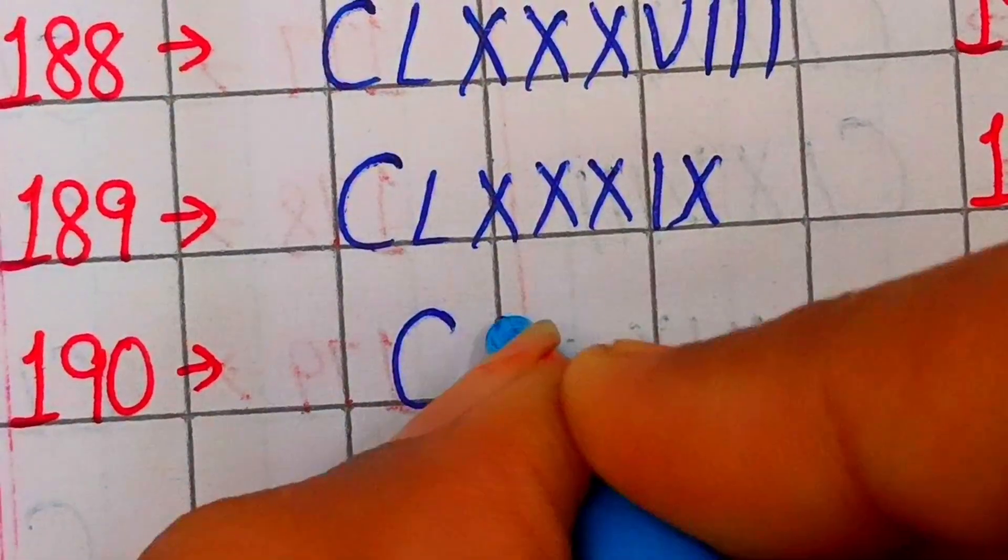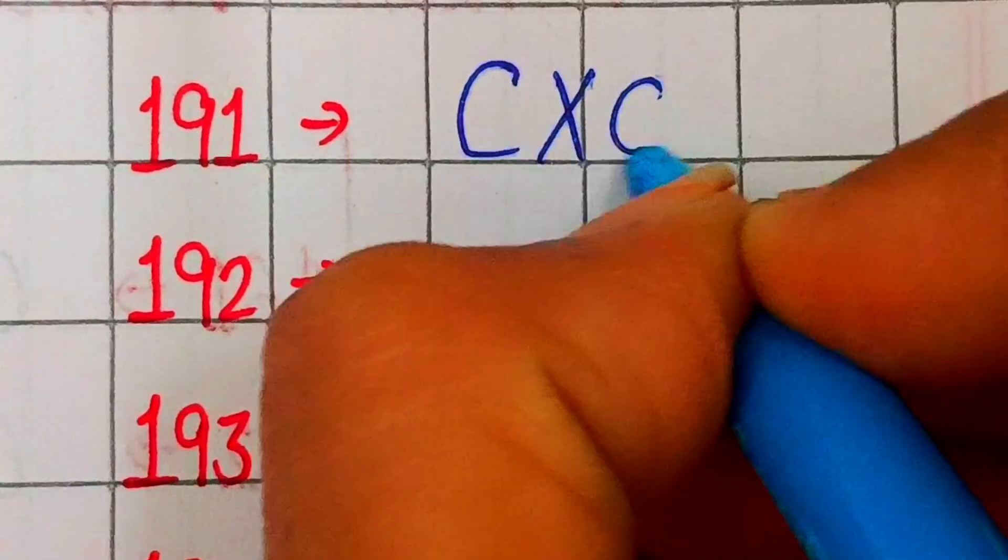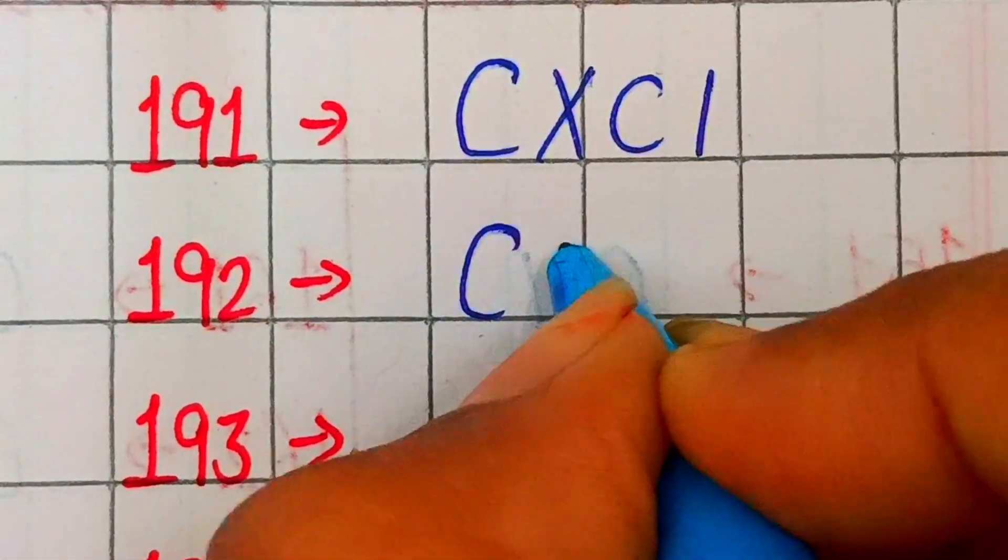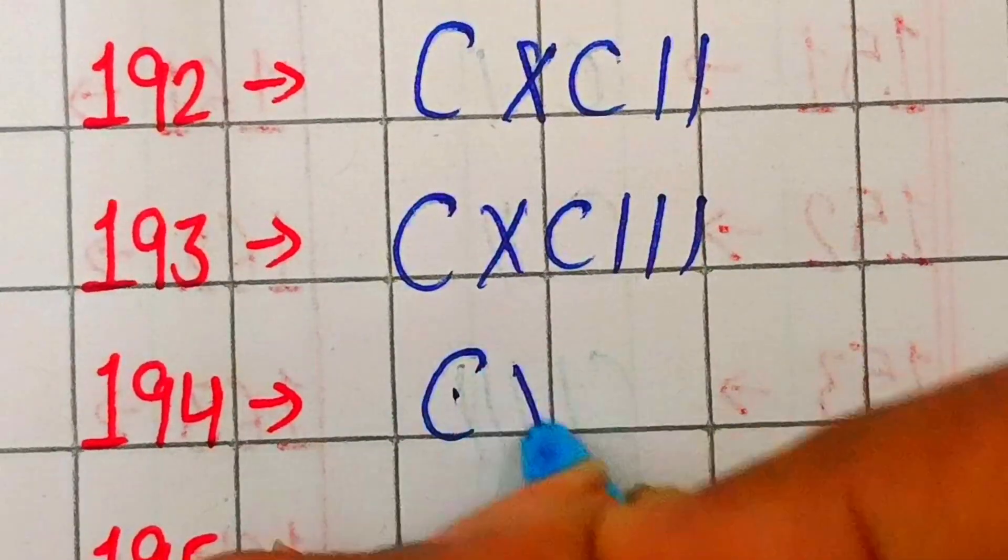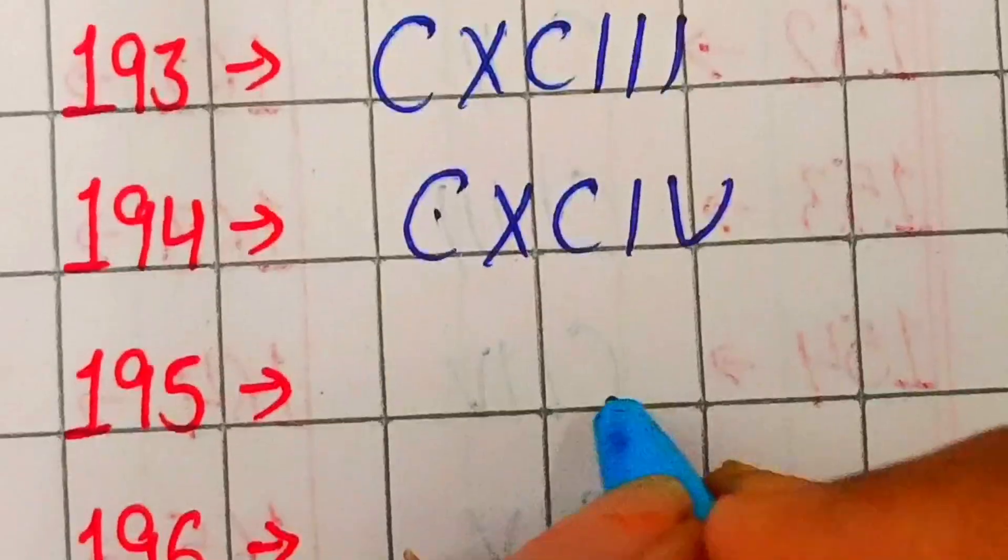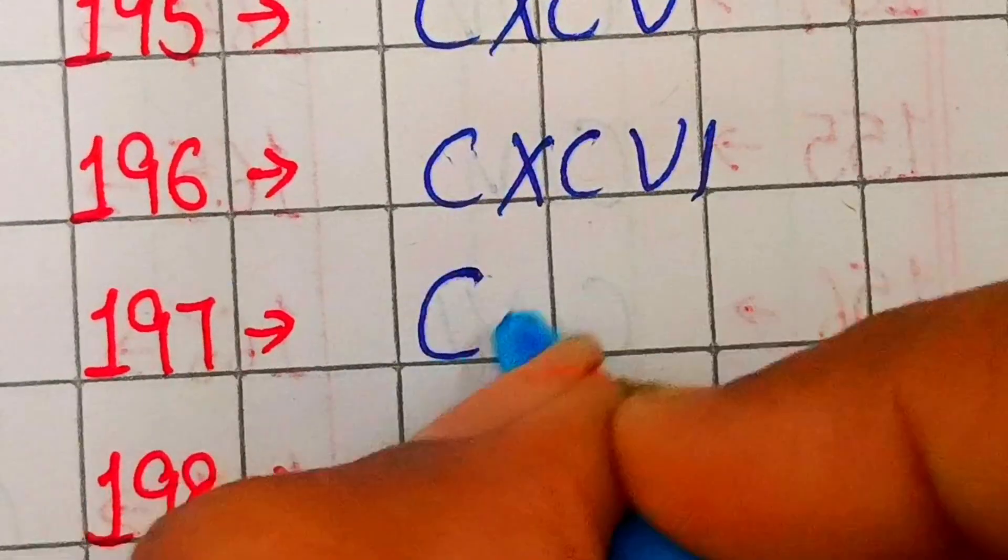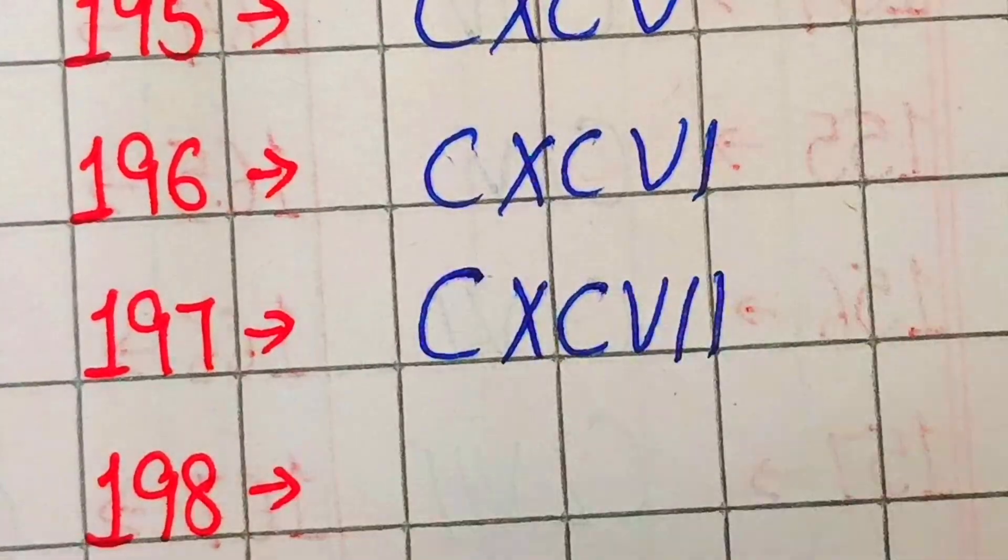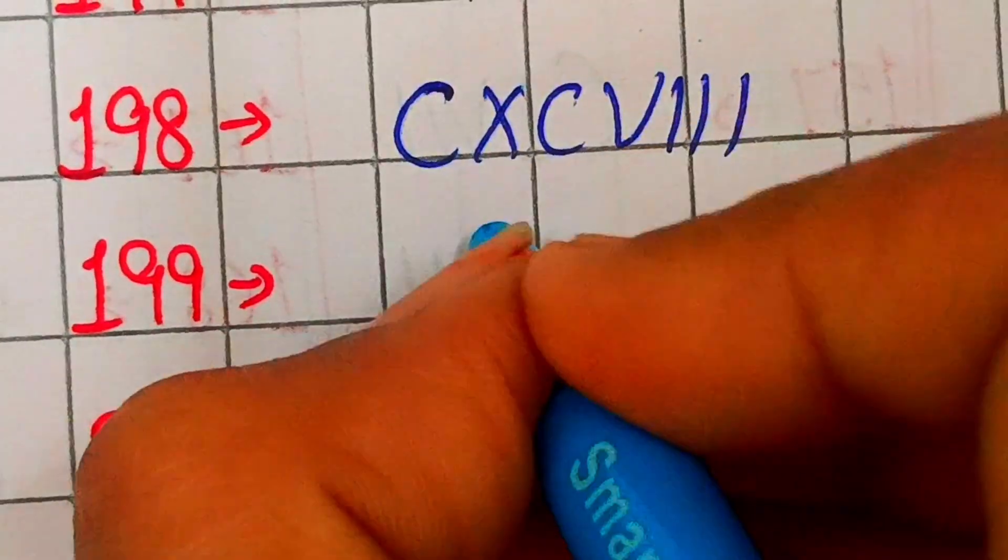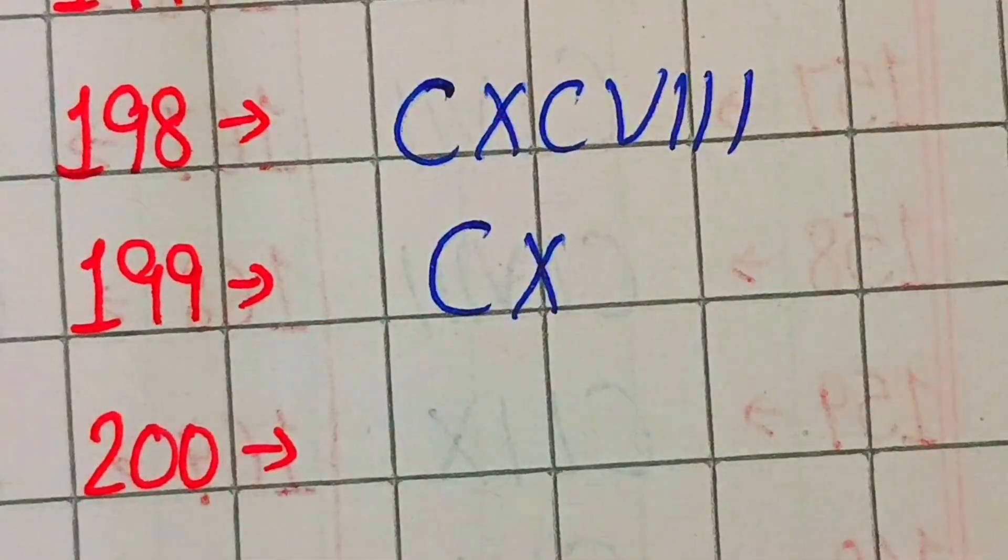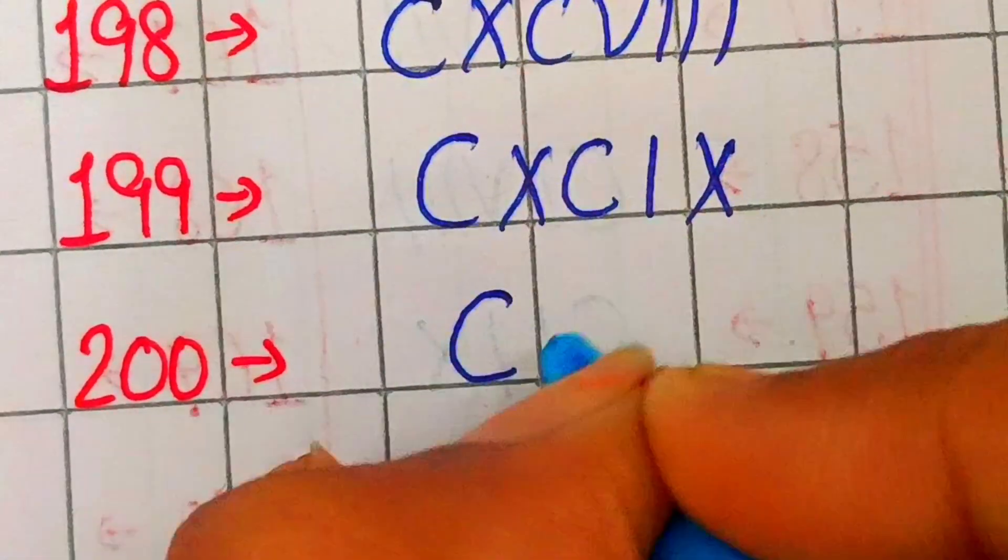190 CXC, 191 CXCI, 192 CXCII, 193 CXCIII, 194 CXCIV, 195 CXCV, 196 CXCVI, 197 CXCVII, 198 CXCVIII, 199 CXCIX, 200 CC.